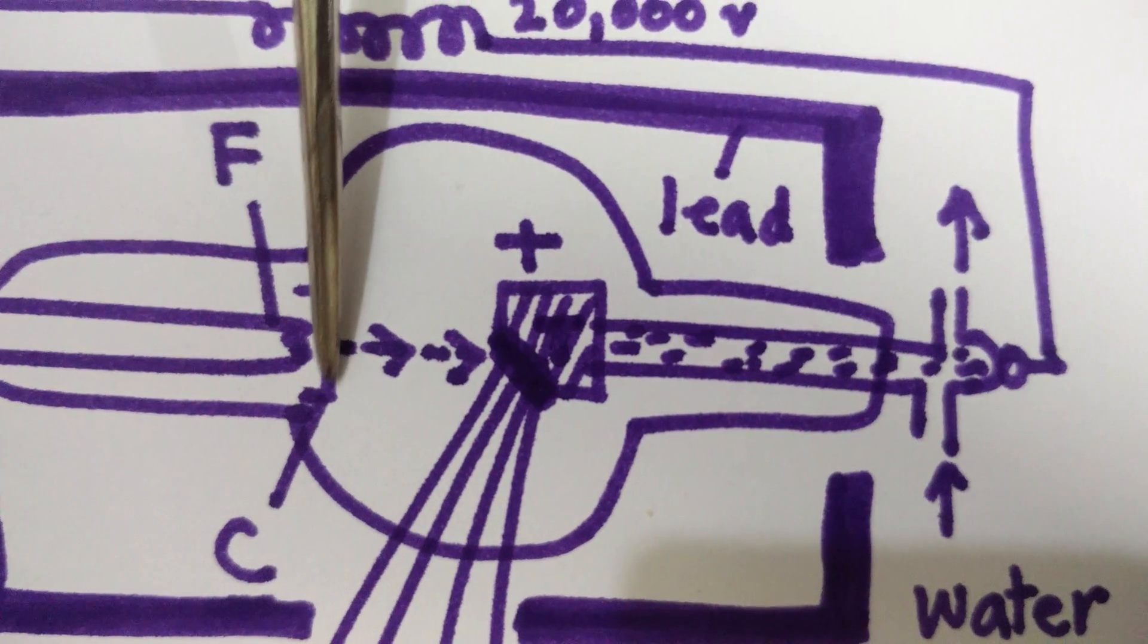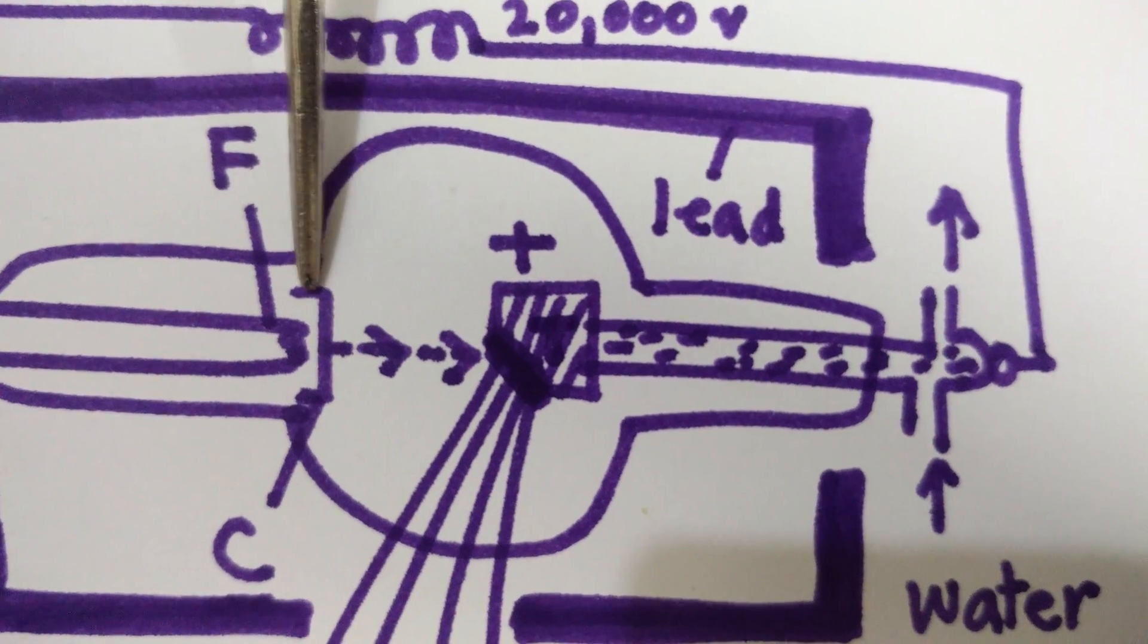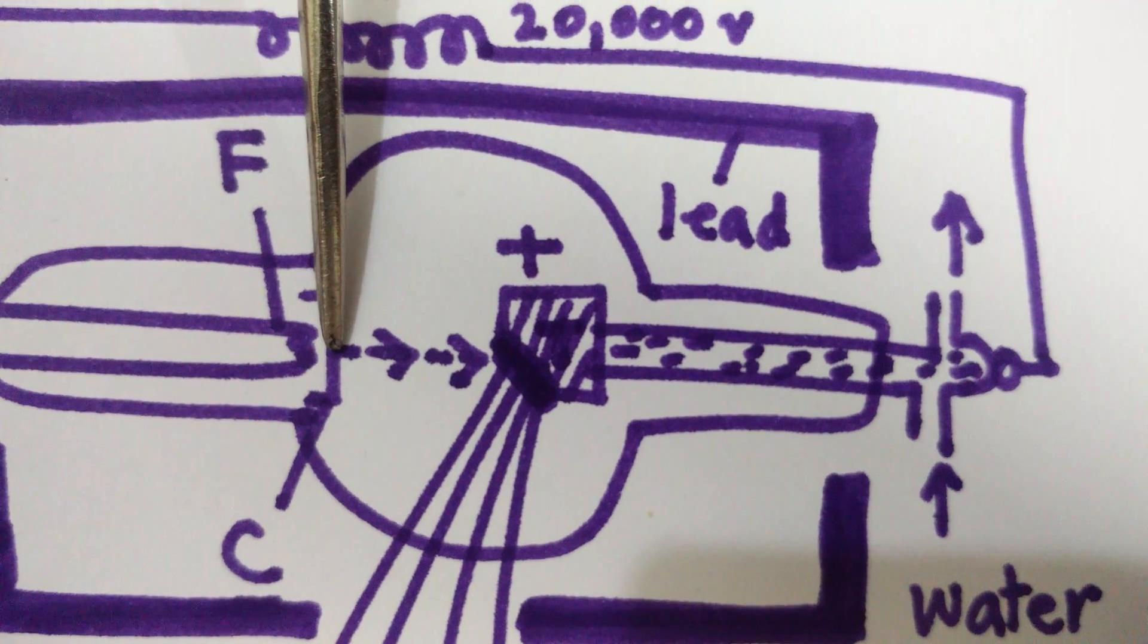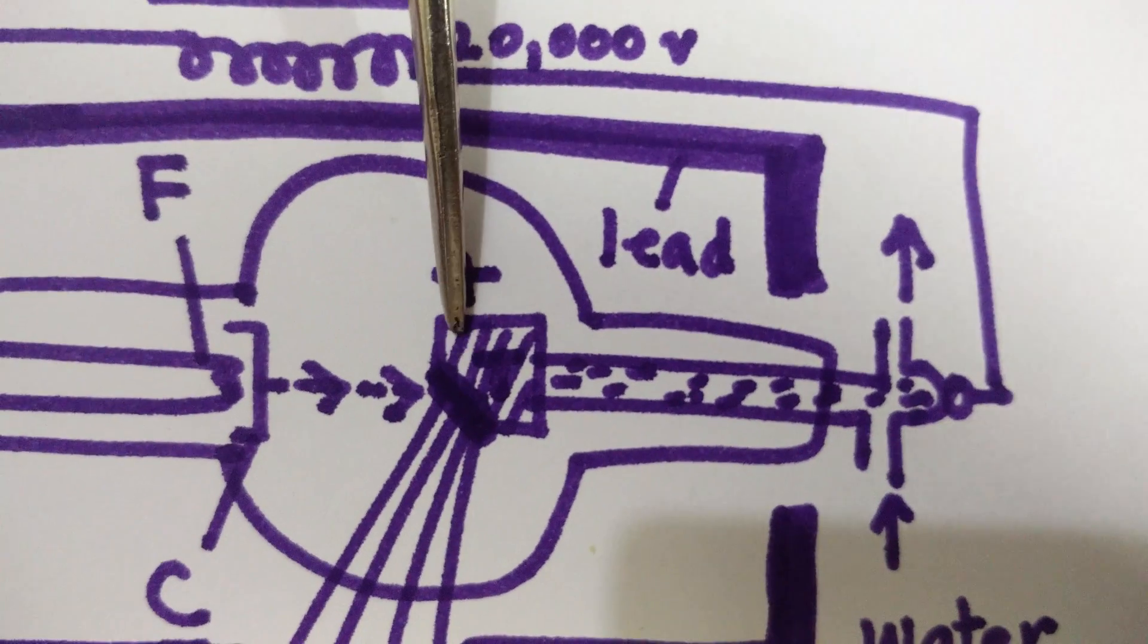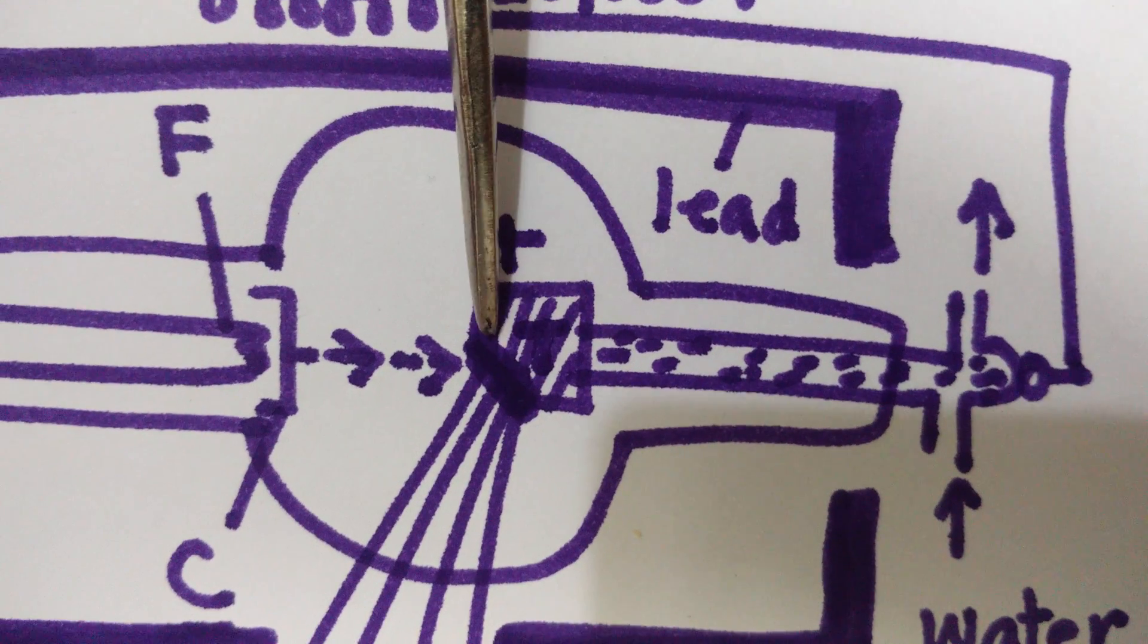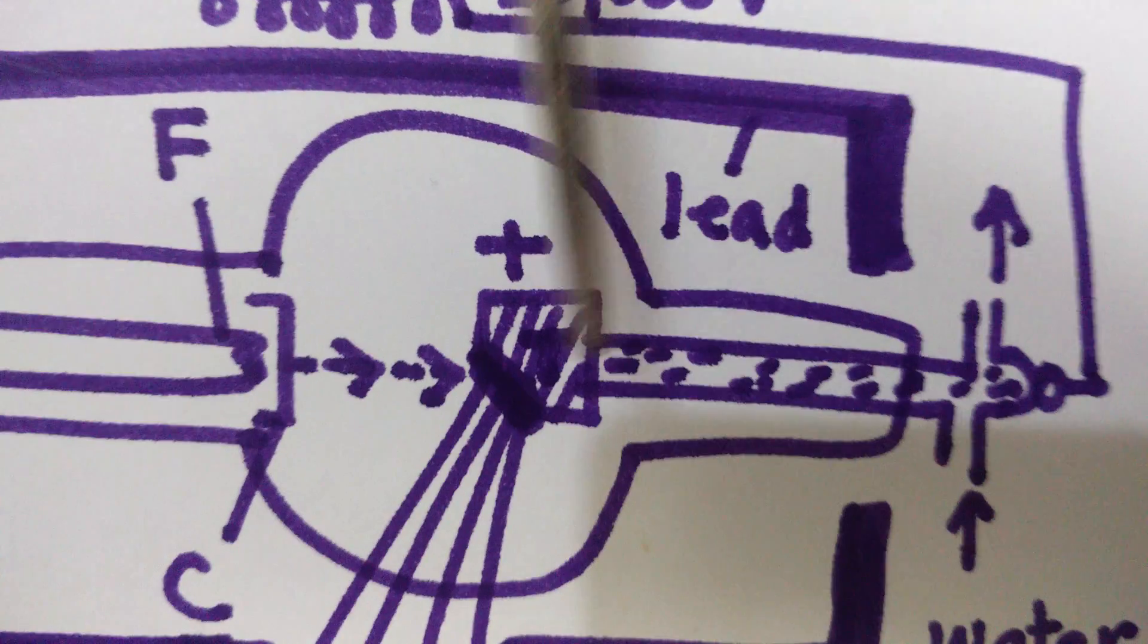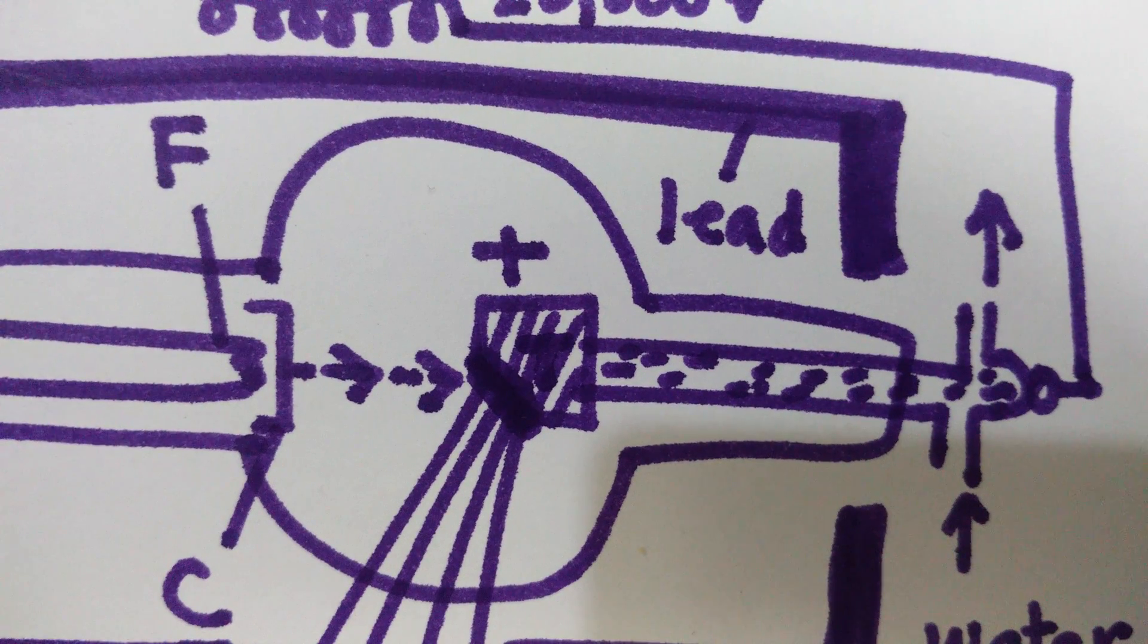The role of the molybdenum cylinder is to concentrate the electrons emitted by the filament into a fine beam. In front of the filament is a copper block whose front surface is inclined at 45 degrees with respect to the electron beam.